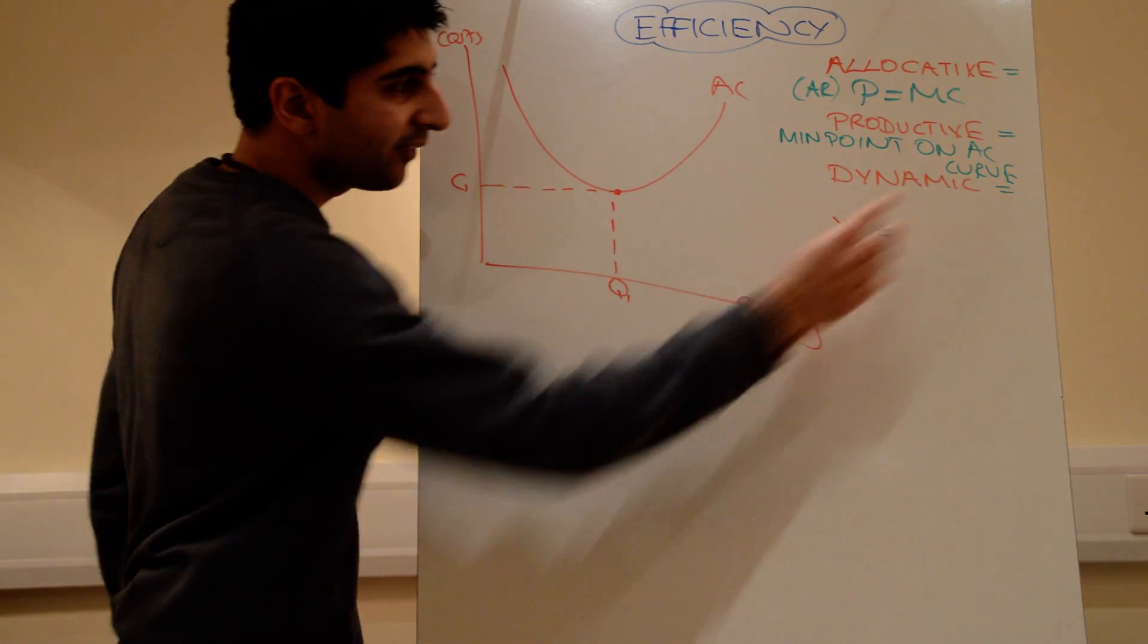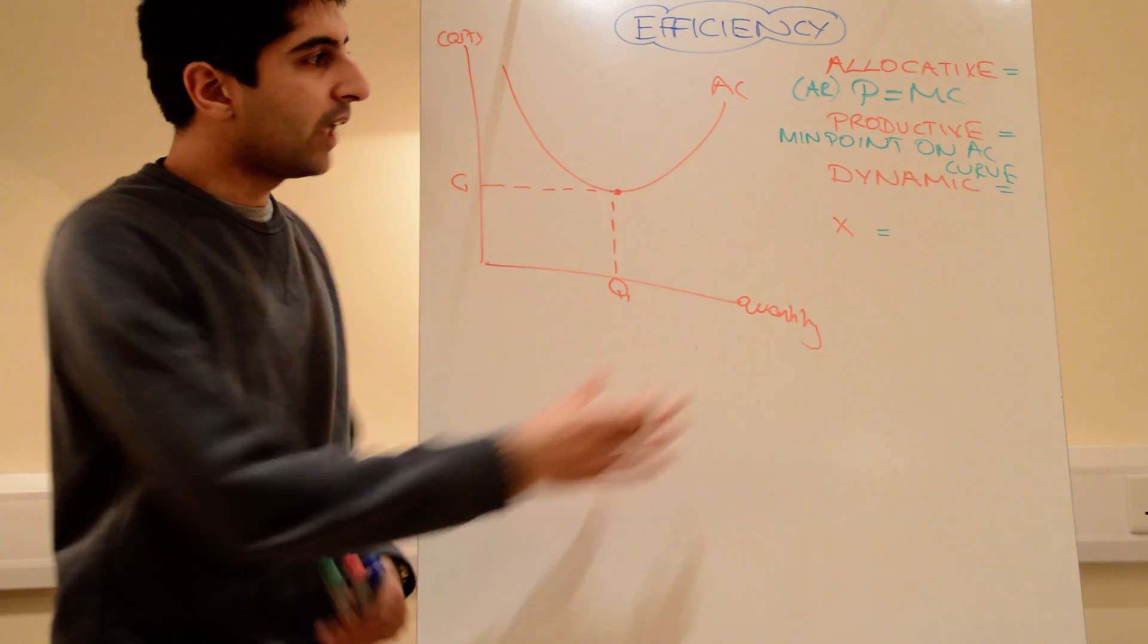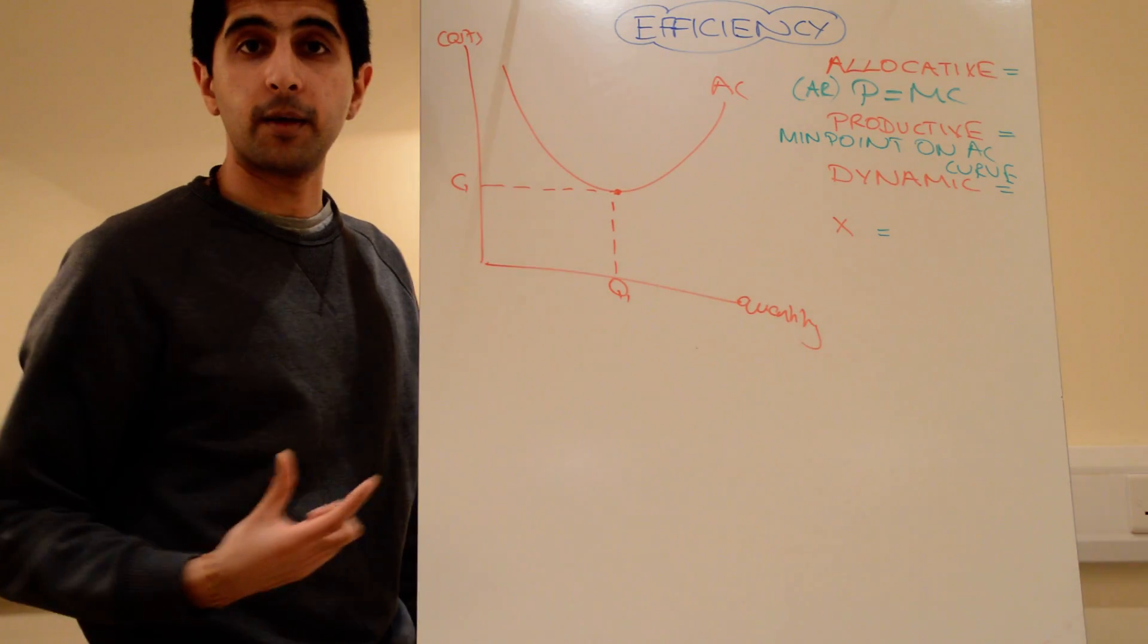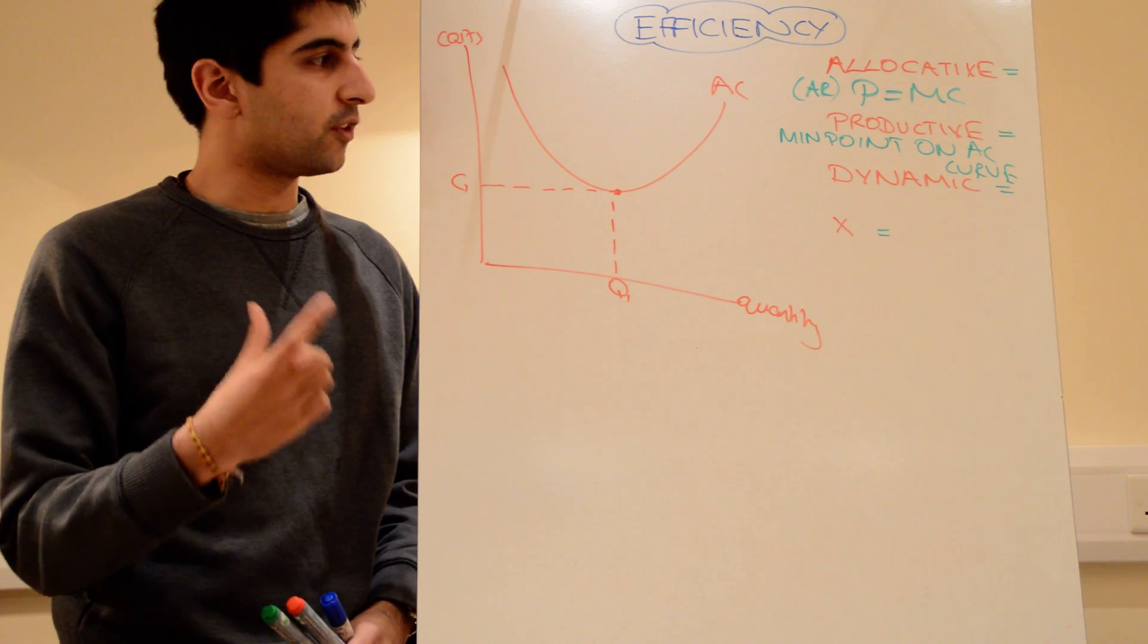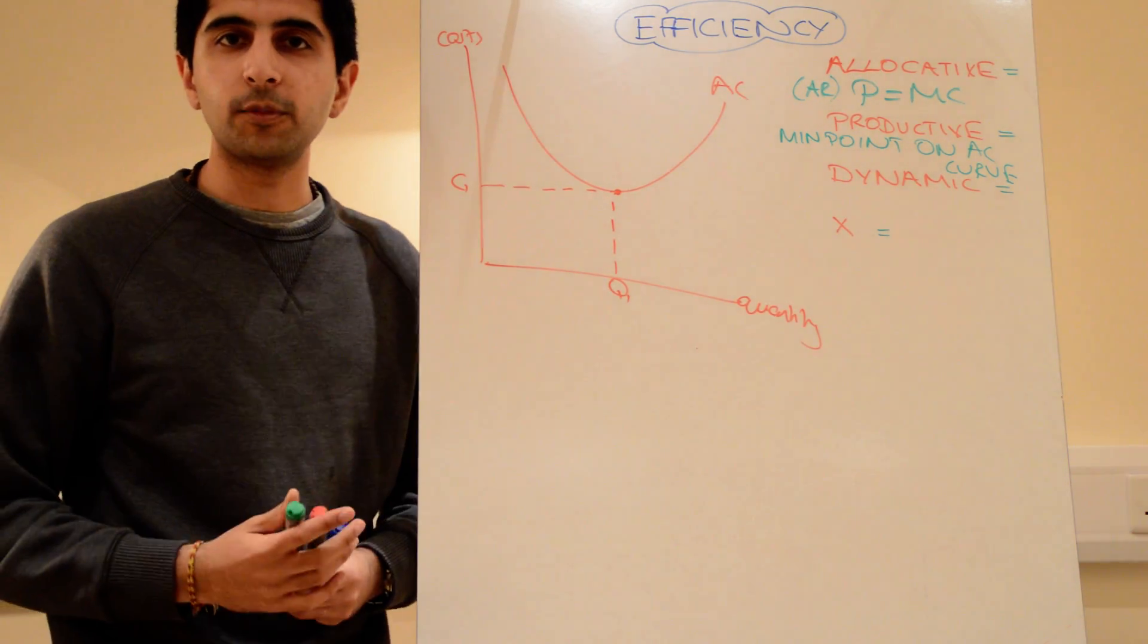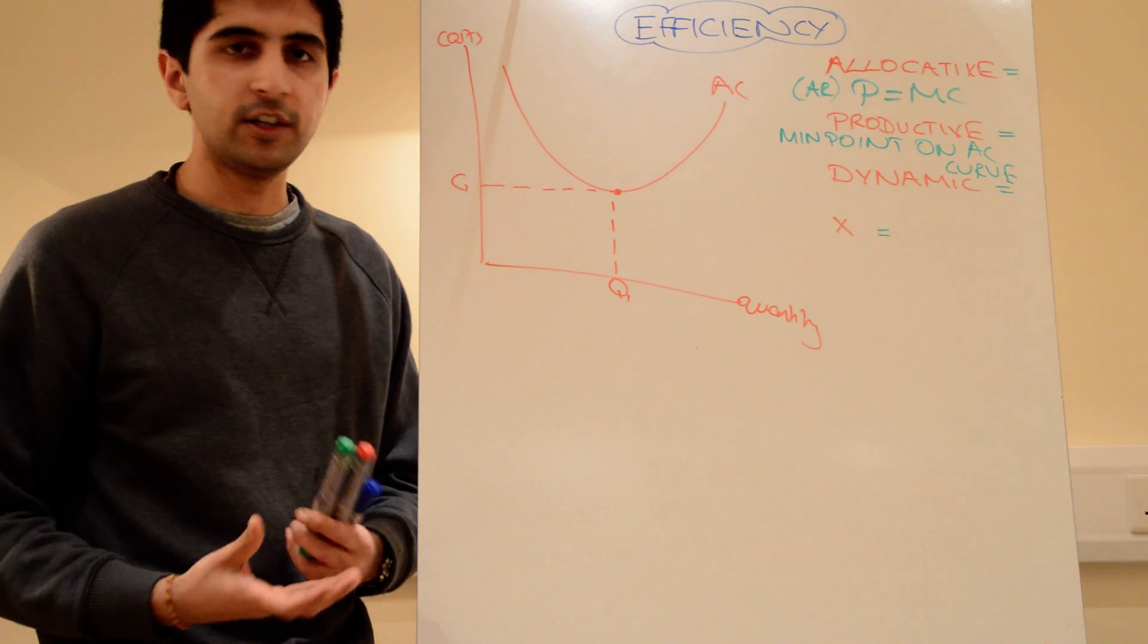We also have dynamic efficiency. Dynamic efficiency occurs over time. For that to be achieved, there needs to be supernormal profits being made by a firm. If there are, then maybe over time, those supernormal profits might be reinvested back into the company, maybe in R&D expenditure, innovating new products, trying to develop new technologies, whatever it might be.